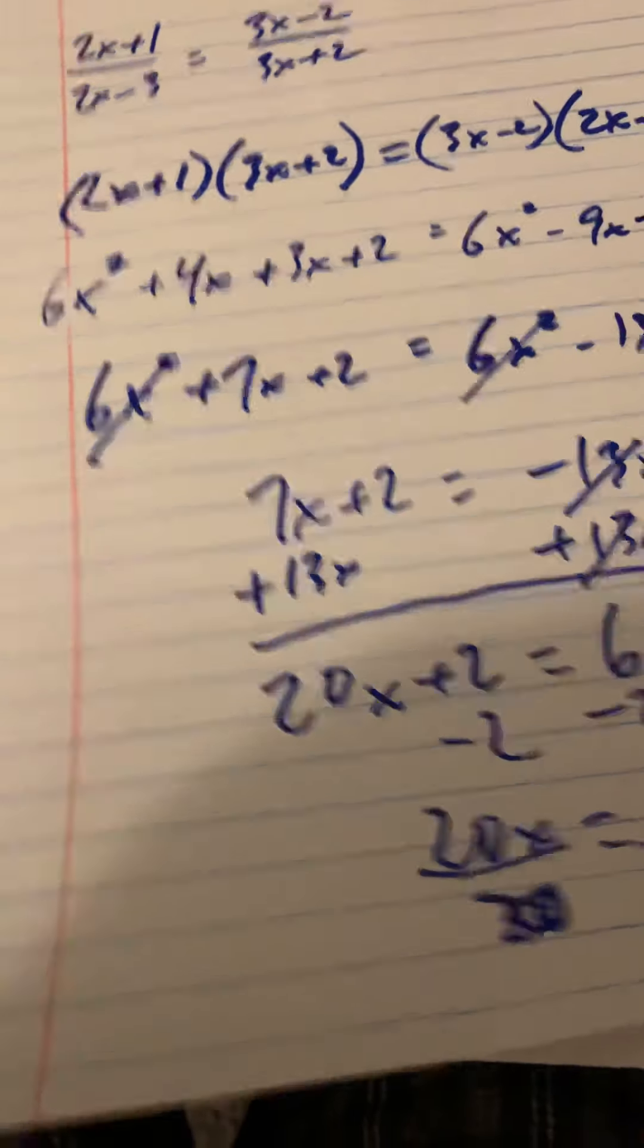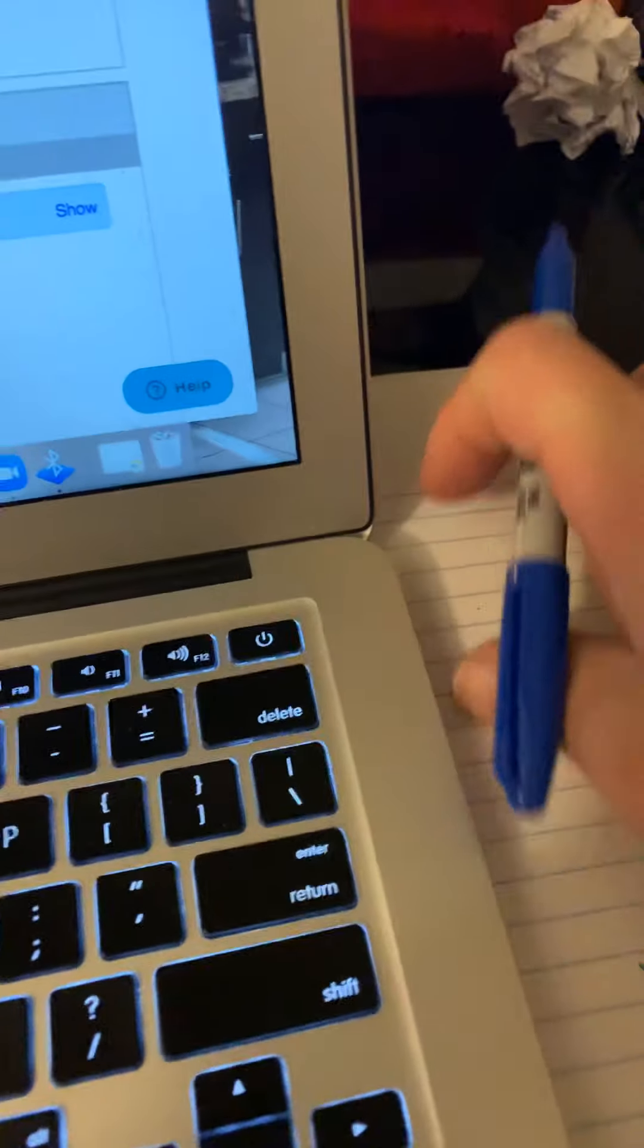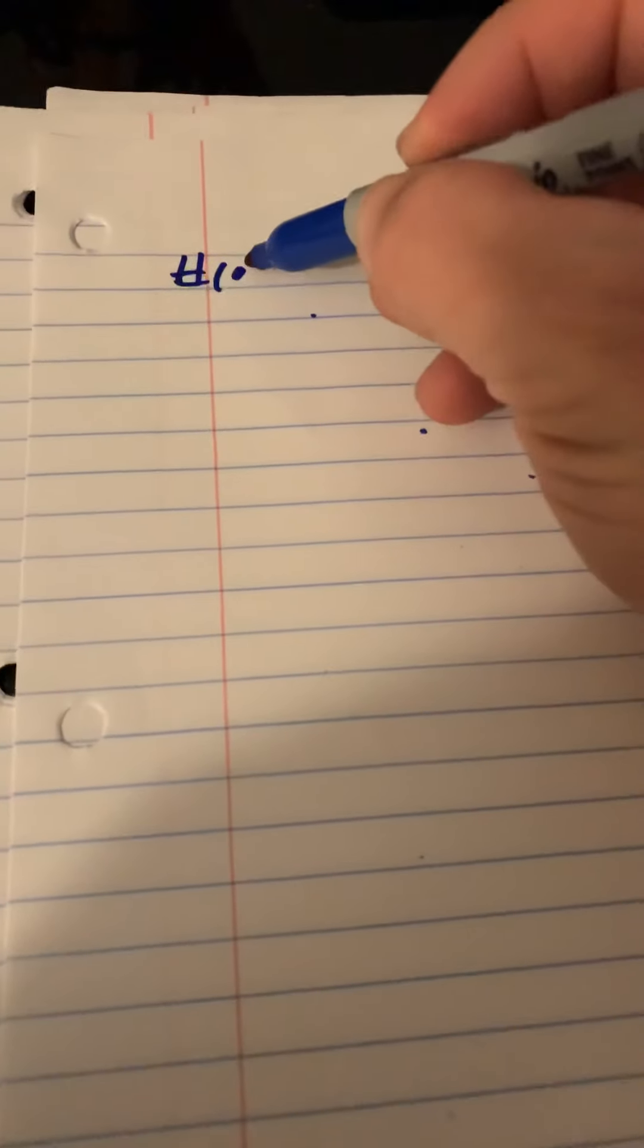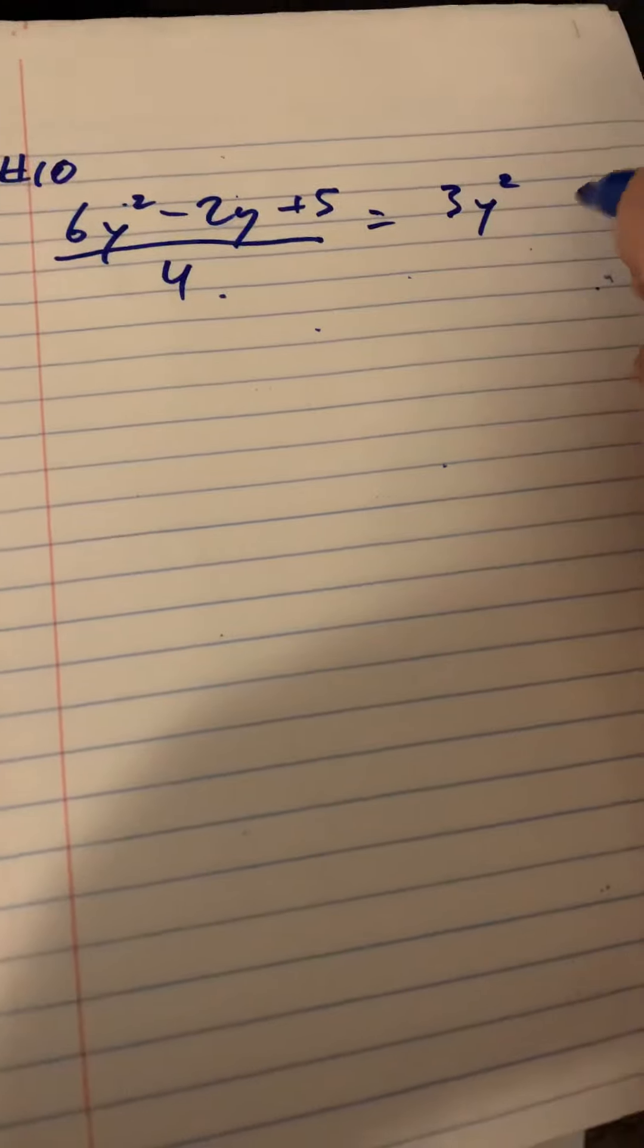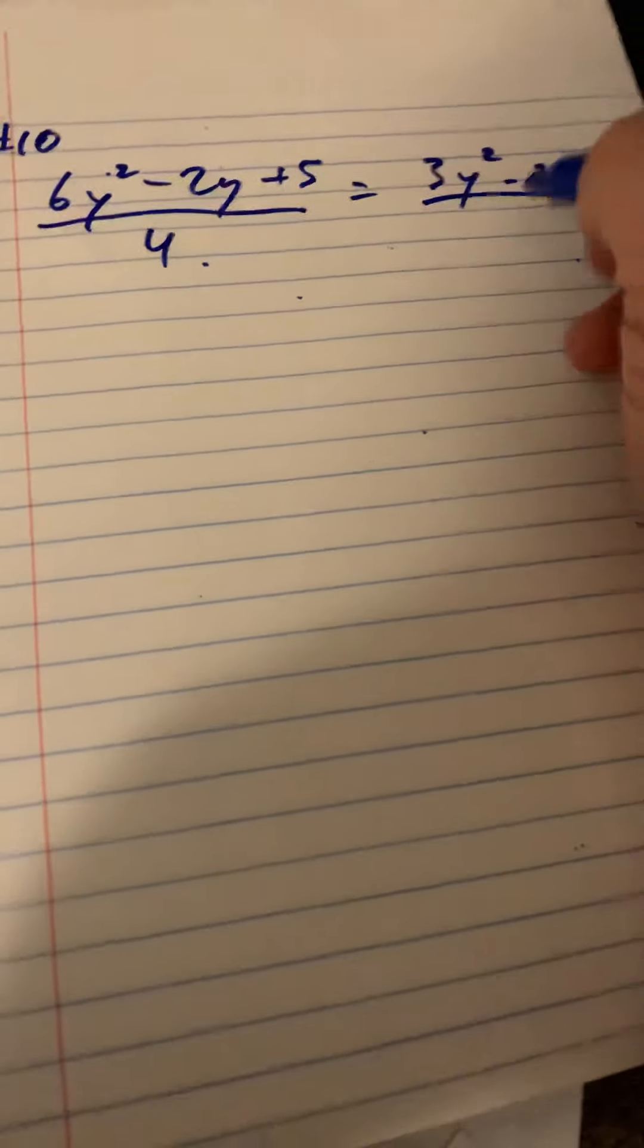Alright, let me go ahead and give you one more example here. I think I forgot to write it down. Give me just a second. I'm actually going to do number 10. So number 10 is 6y squared minus 2y plus 5 over 4 equals 3y squared minus 2 over 2.